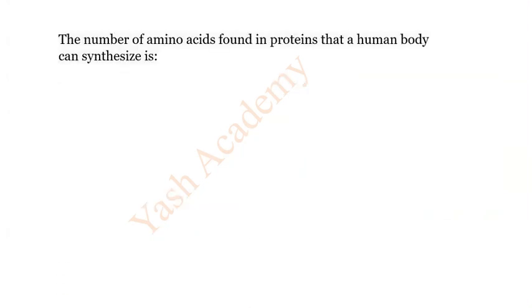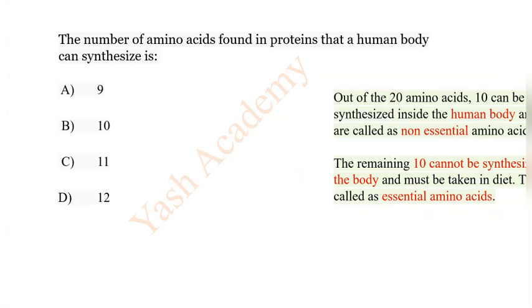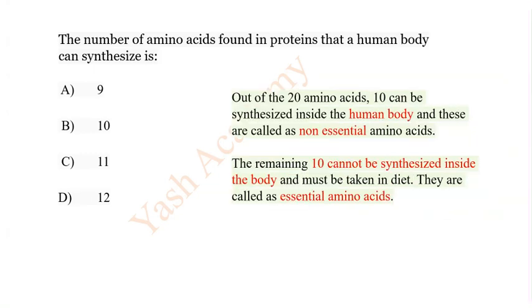The number of amino acids found in proteins that a human body can synthesize is: A 9, B 10, C 11, D 12. So here correct answer option is B: 10.